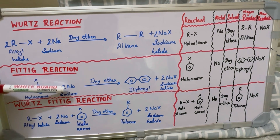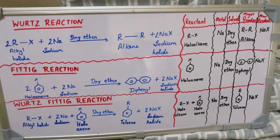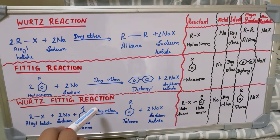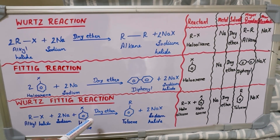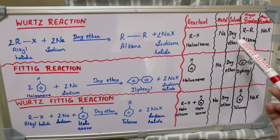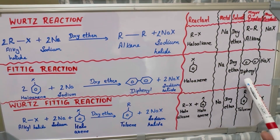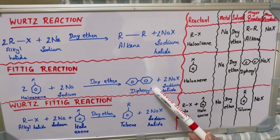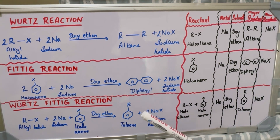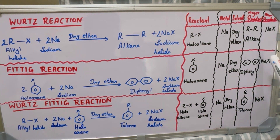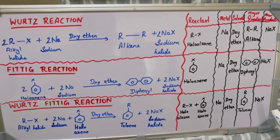In all three reactions, sodium is used as the metal and dry ether is used as the solvent. The major product in the Wurtz reaction is alkane, in the Fittig reaction it is diphenyl, and in the Wurtz-Fittig reaction the major product is toluene. The minor product formed in all three reactions is sodium halide.